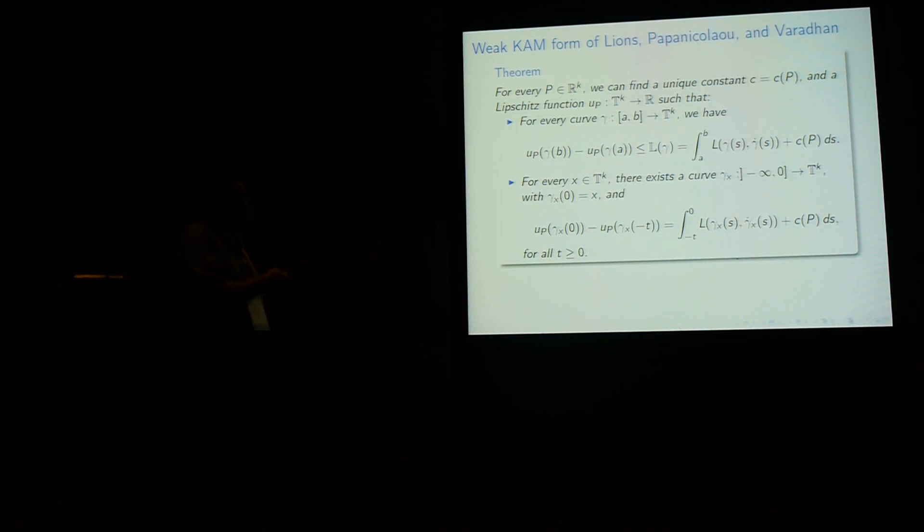So because if you just state with the viscosity solution type of thing, then you don't see the dynamics coming in. So here is the weak form of the Lions, Papanicolaou and Varadhan theorem. So you fix p and then you can find a unique constant cₚ and a Lipschitz function uₚ from Tᴷ into R, such that for every curve, if you just try to compute the action of the curve, I'll come back to the cₚ later, it's larger than the difference of value of the function between the endpoints. Of course, you see, the Lagrangian is in fact, in all problems, the Lagrangian to find extremal or minimizer, because you fix the endpoint, is defined up to an additive constant. You can change the Lagrangian by a constant, it's not going to change anything. But here, what happens, in fact, is that if you want to have an inequality of that sort, you have to normalize the Lagrangian by adding an appropriate constant. Here you cannot play with the constant, it has to be fixed.